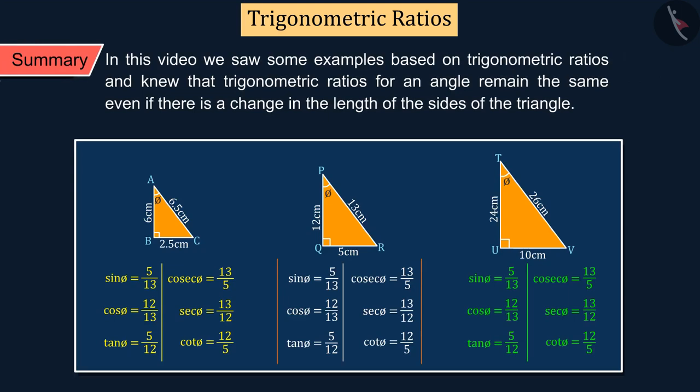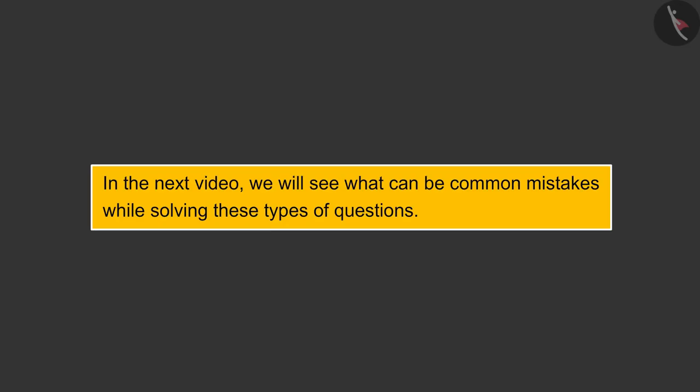In this video, we saw some examples based on trigonometric ratios and got to know that trigonometric ratios for an angle remain the same even if there is a change in the length of the sides of the triangle. In the next video, we will see what can be common mistakes while solving these types of questions.